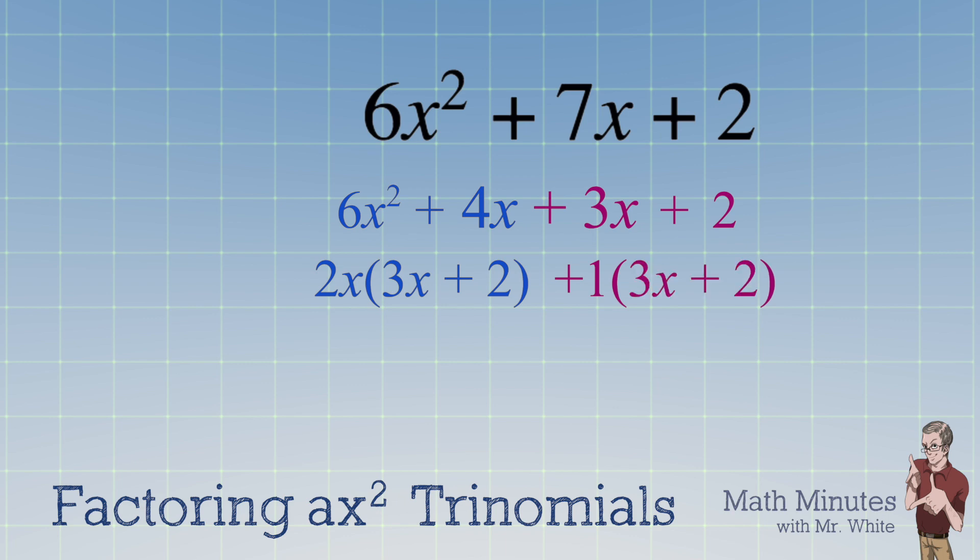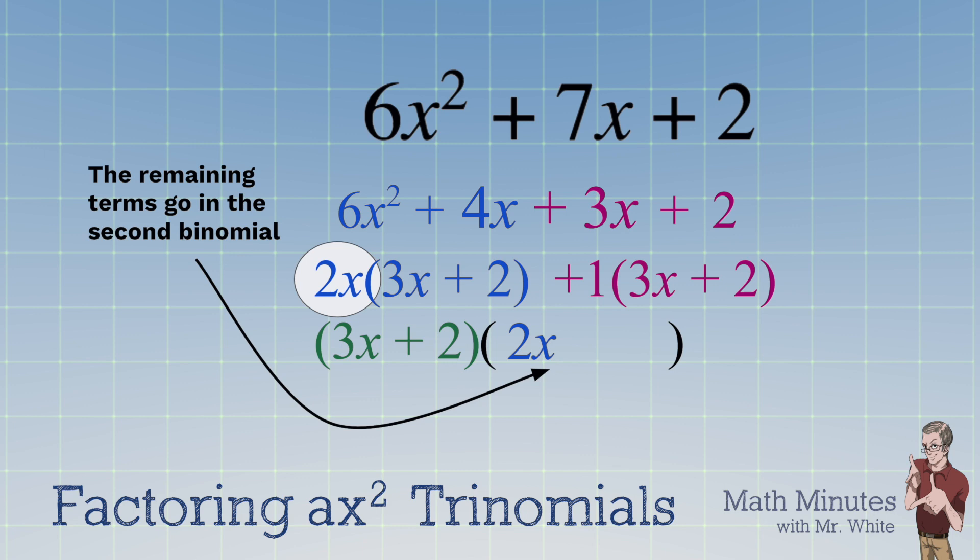Now, what do you notice about the two groupings? They have what's called a common binomial, 3x plus 2, which we factor or divide it out, leaving two terms to go in the second set of parentheses. The 2x is left on the first group, or the blue group, so we place it inside the parentheses. And then the positive 1 is left on the second, or that red group, so we place it inside the parentheses as well.